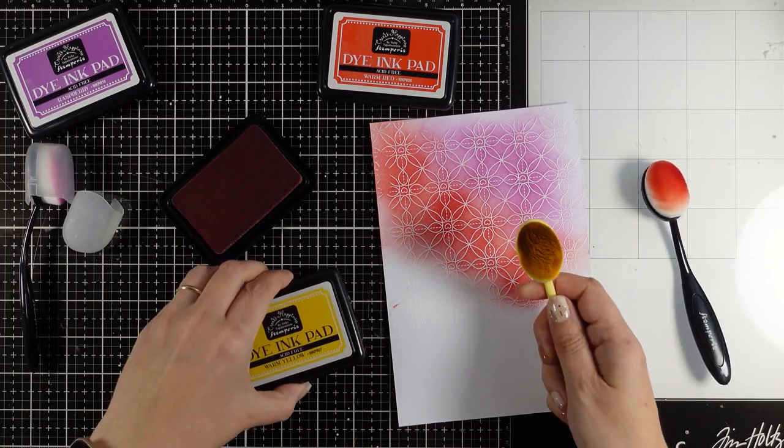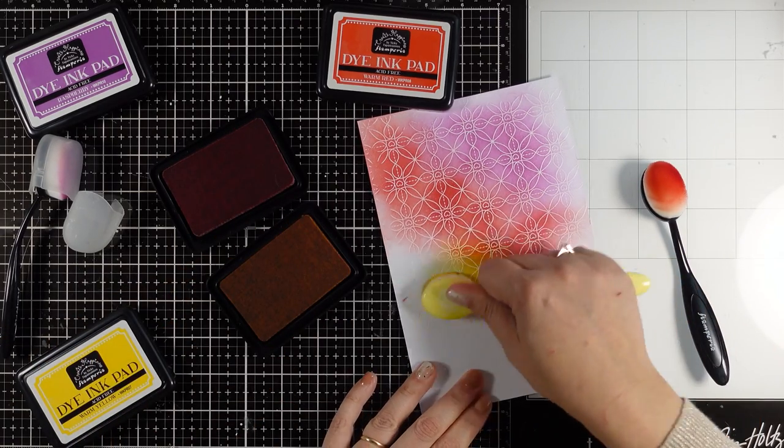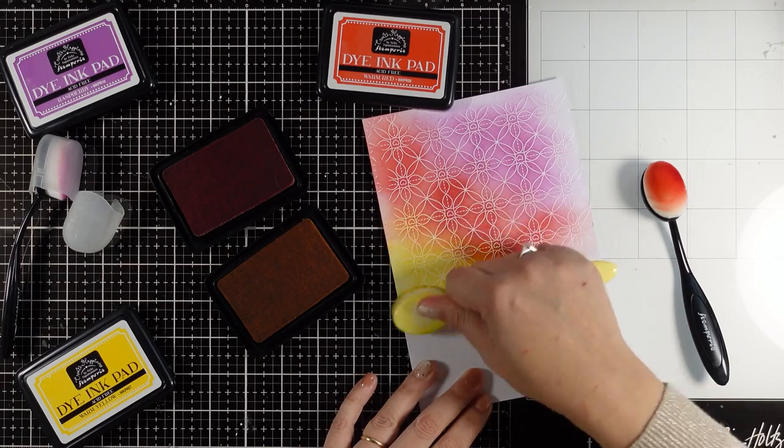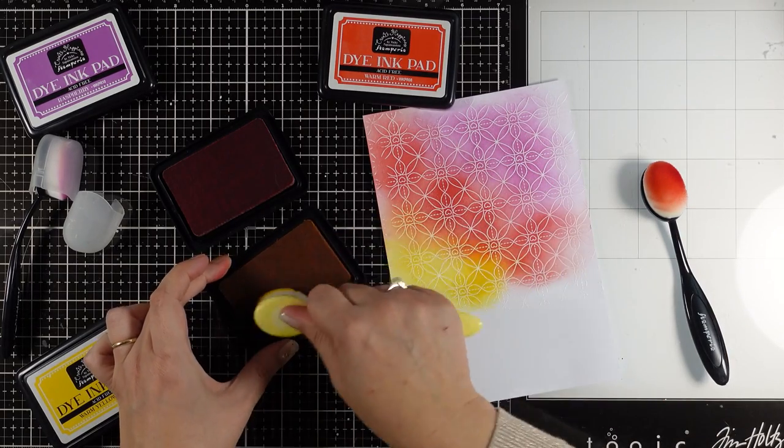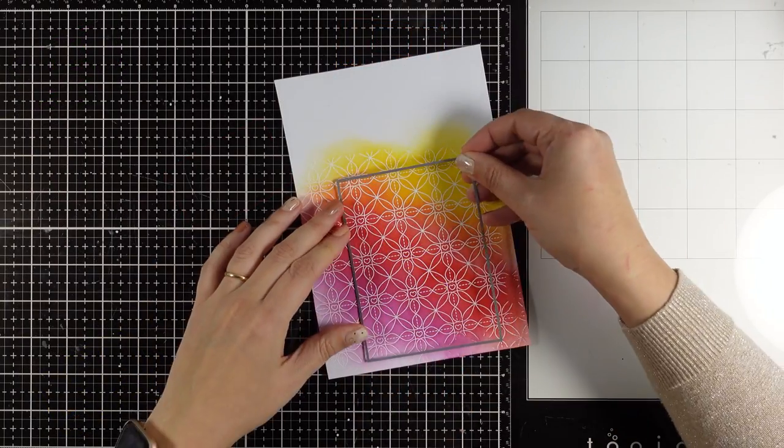Now I'm going to throw in a third color for my background. This time I'm going with warm yellow, and again it blends beautifully with the warm red, creating kind of an orange in between. So this is how my background looks.